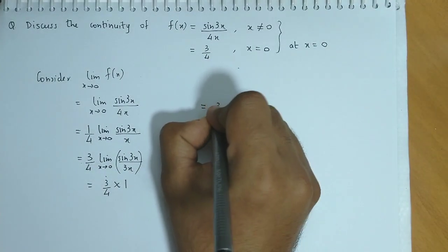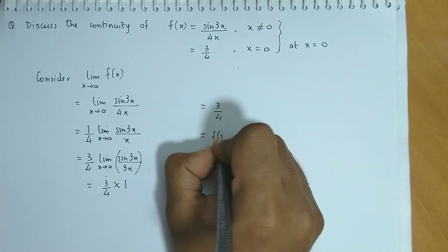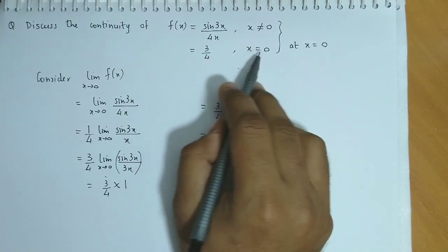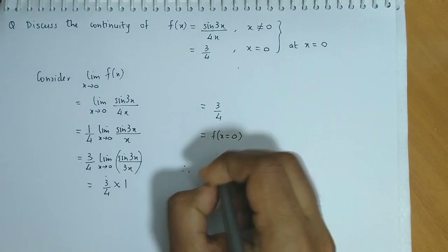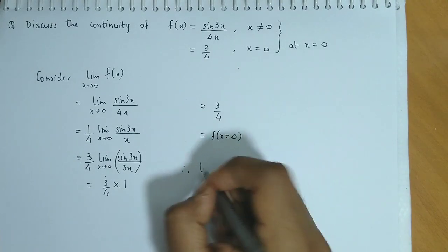So basically we have obtained the value 3 by 4 and this matches at x equal to 0. The value at x equal to 0 given is 3 by 4. Therefore we could say the given function is continuous.